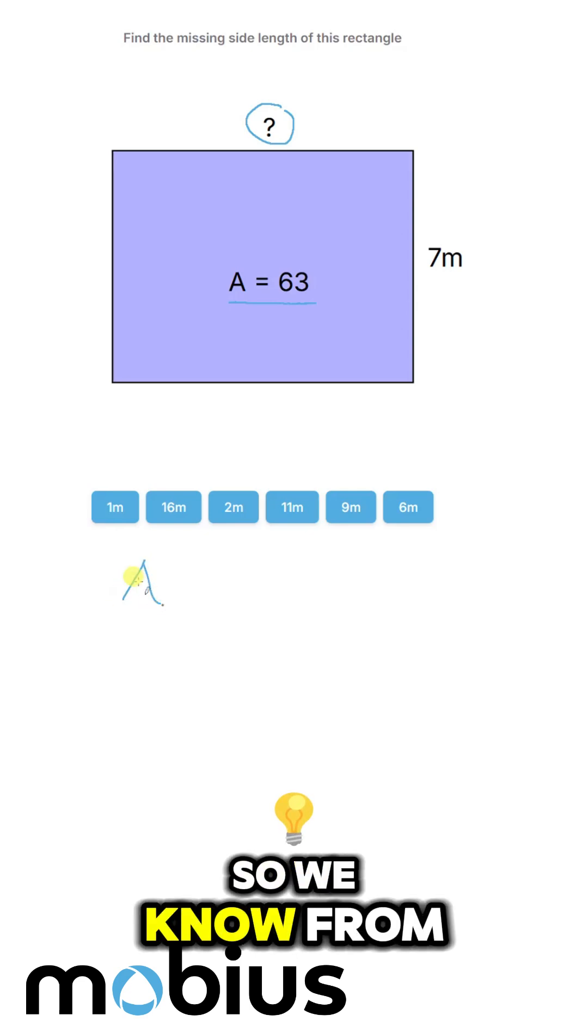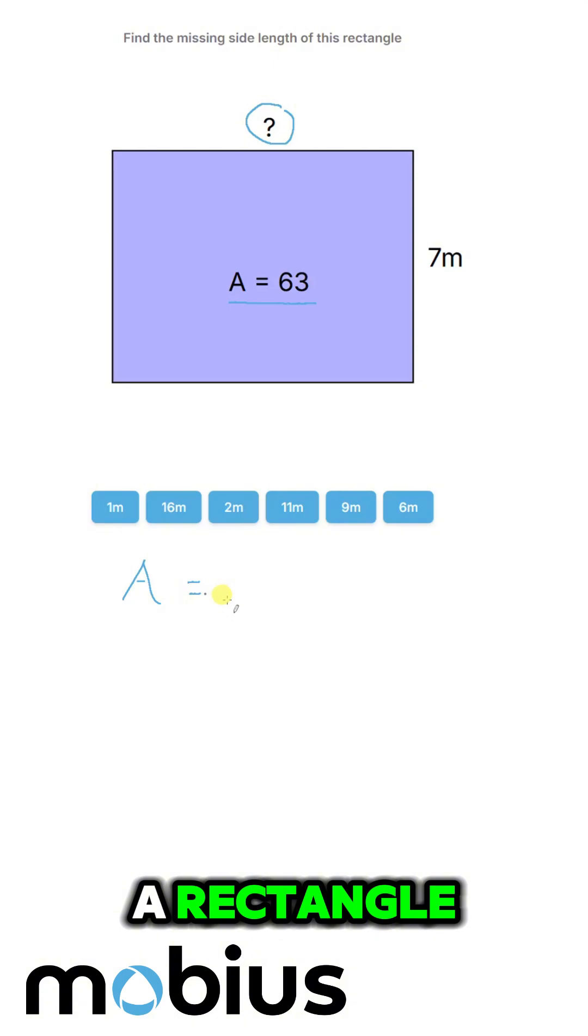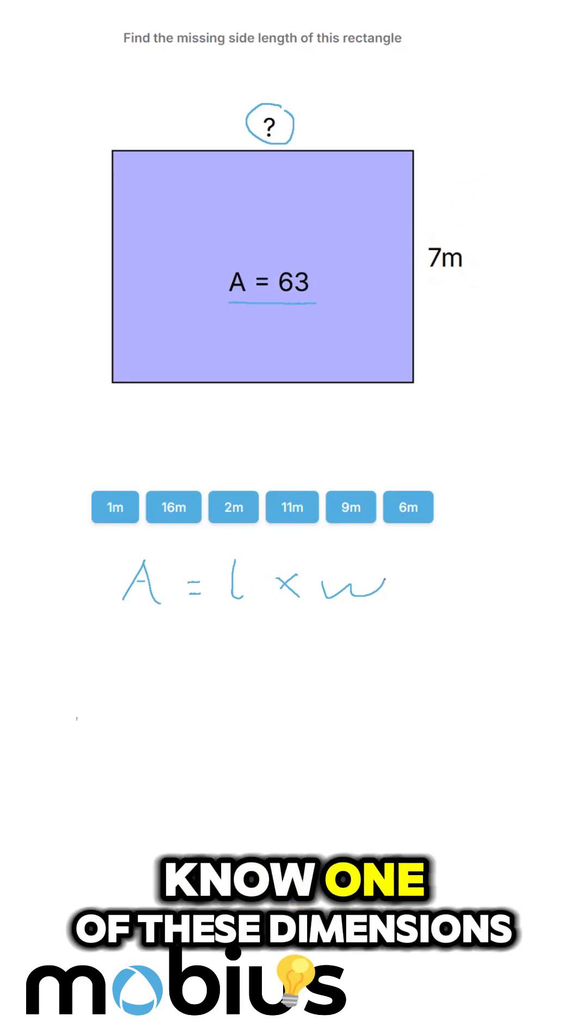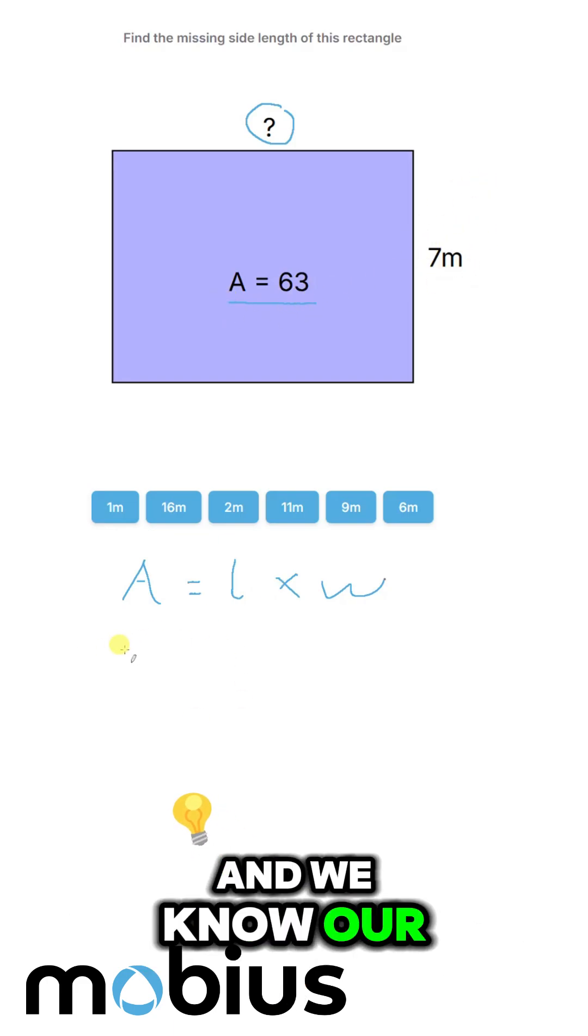So we know from our area formula for a rectangle, area is length times width. And we know one of these dimensions and we know our area.